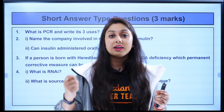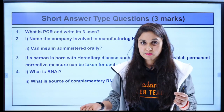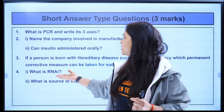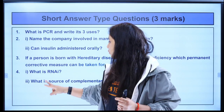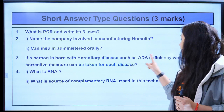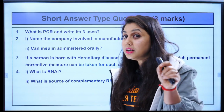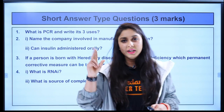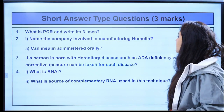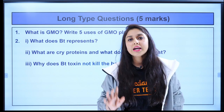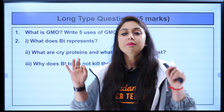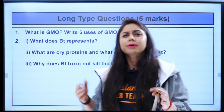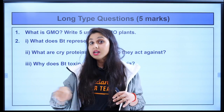Write whatever is clicking in your mind on paper right now — whether in points or in paragraphs, it doesn't matter. Next question: what is RNAi, that is RNA interference? It's a very easy three-mark question. What is the source of complementary RNA used in this technique? There are two sources — think about it. Moving to the five-mark questions: what is GMO — genetically modified organisms — and write five uses of GMO plants? I covered this in the revision one-shot as well.